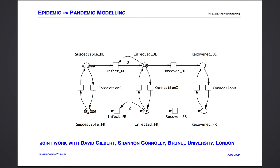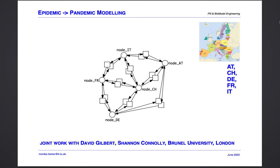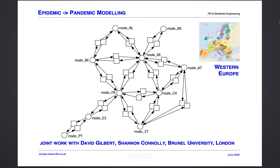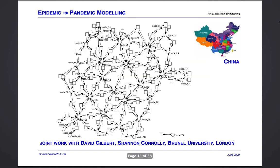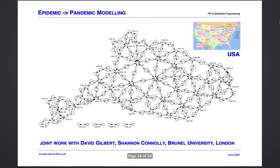This was pretty easy, and we basically know how we would have to model more complicated spatial scenarios — comprising five countries, ten countries, or even whole Europe, China, or the USA. We do know how the models have to look like, but it's hardly possible to construct them manually.